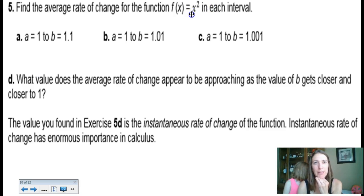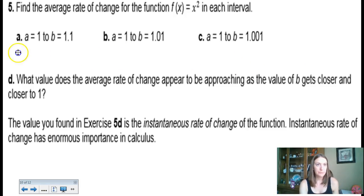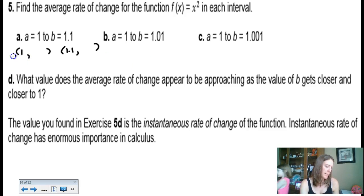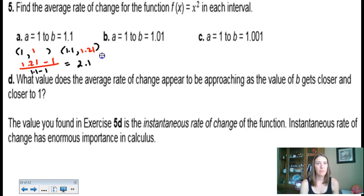Finding the average rate of change on a parabola over increasingly close intervals: from x equals 1 to x equals 1.1, the outputs are 1 and 1.21, giving a rate of change of (1.21 − 1) / (1.1 − 1) = 0.21/0.1 = 2.1. From x equals 1 to x equals 1.01, the outputs are 1 and 1.0201, giving a rate of change of 2.01. Moving even closer — from x equals 1 to x equals 1.001 — gives approximately 2.001.